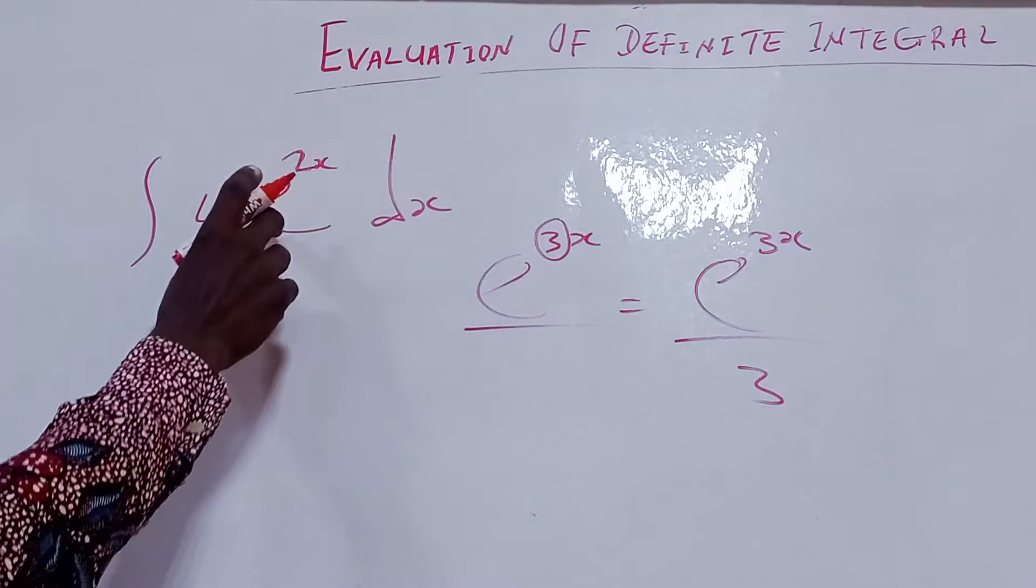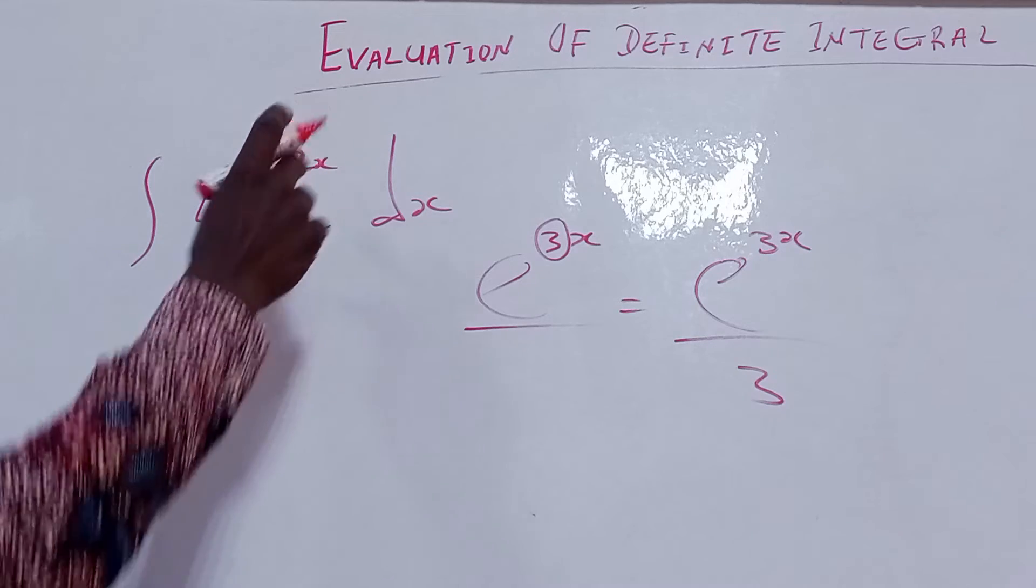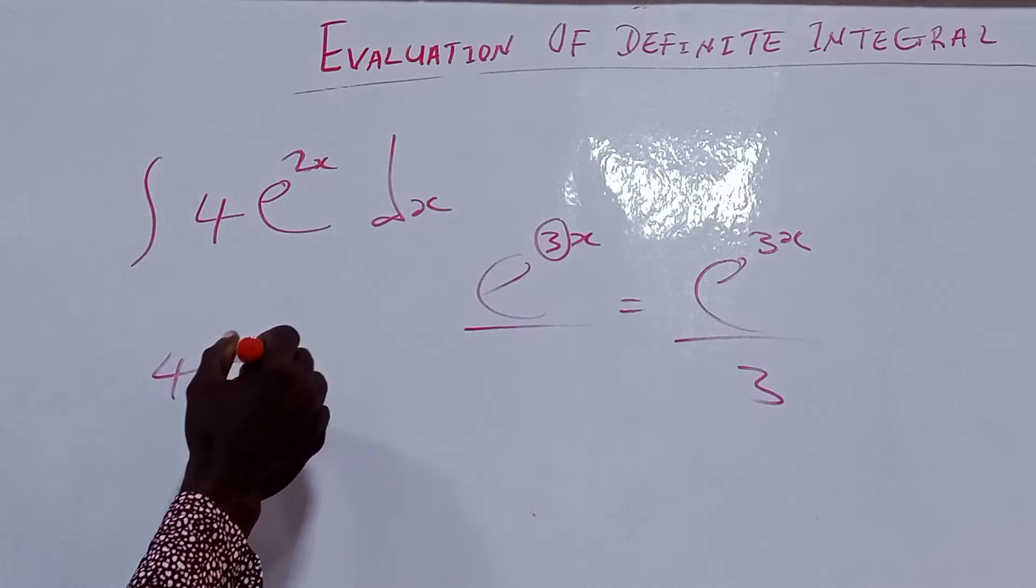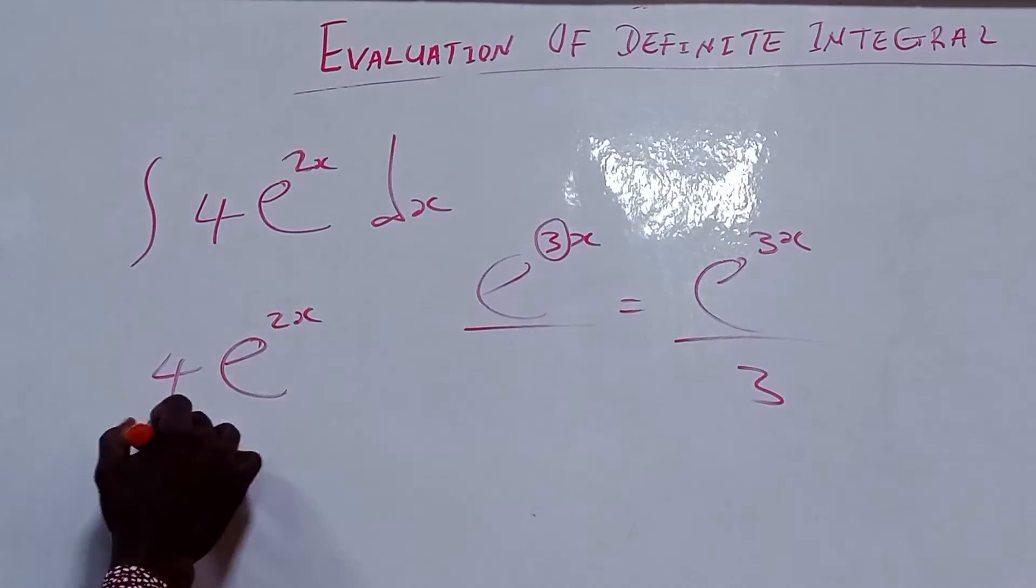So we have 4 exponential 2 raised to power x. Now we have 4x, 4 exponential 2x divided by 3.